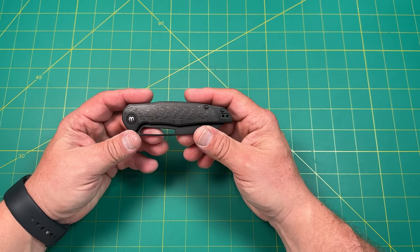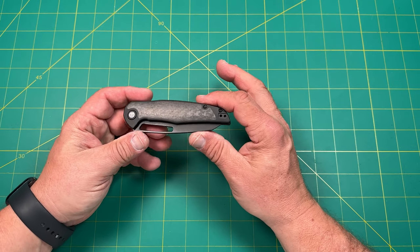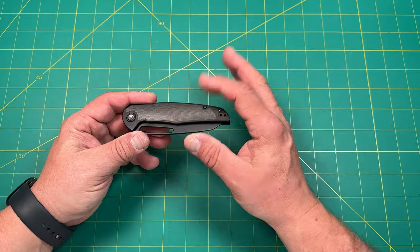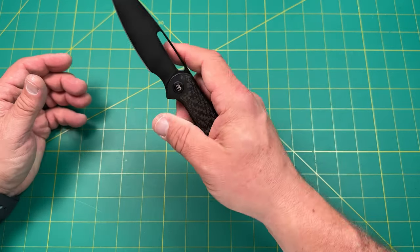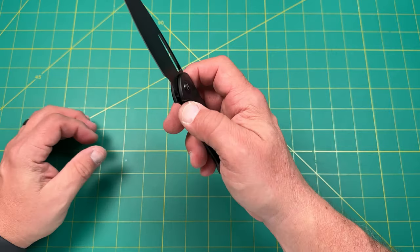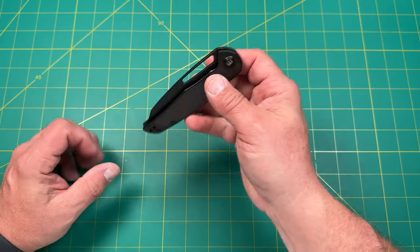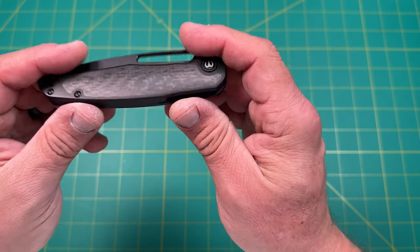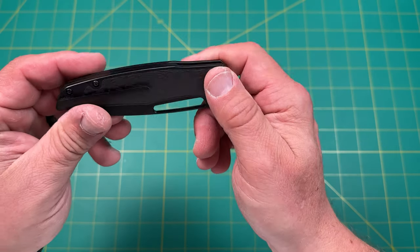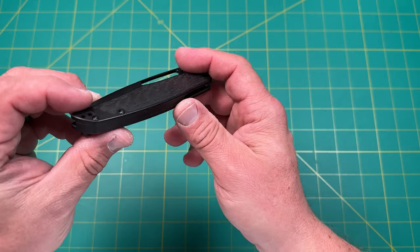The link will be down below. That one was on sale but it has S90V blade steel, which is really nice steel. This particular one is the all blacked out one with the carbon fiber, the twill carbon fiber. Don't know if that's really marbled, but that's what it looks like to me.